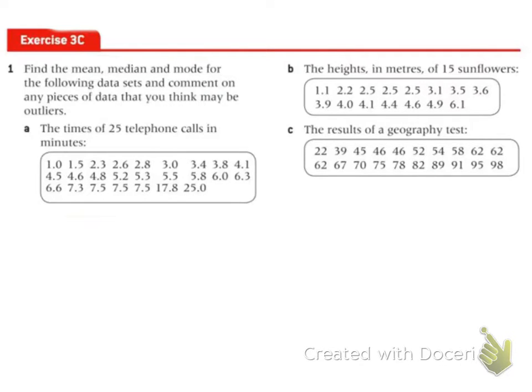Here's your four problems. Find the mean, medium, mode for them, and using your calculator, don't do this stuff by hand, guys. And then comment on any piece of data that you may think that are outliers. It doesn't even have you redo it.